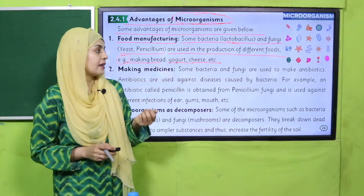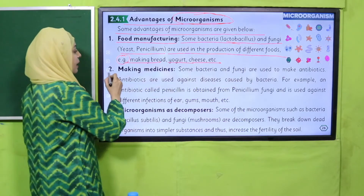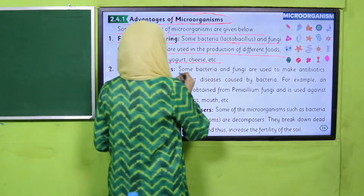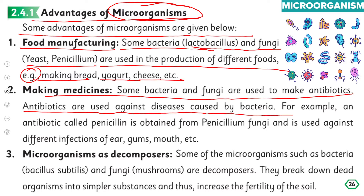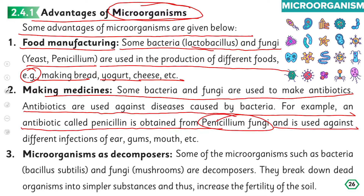Bacteria like Lactobacillus and fungi like yeast and Penicillium are very useful. Then, for making medicines: some bacteria and fungi are used to make antibiotics. Antibiotics are used against diseases caused by bacteria. For example, an antibiotic called penicillin is obtained from Penicillium fungi.